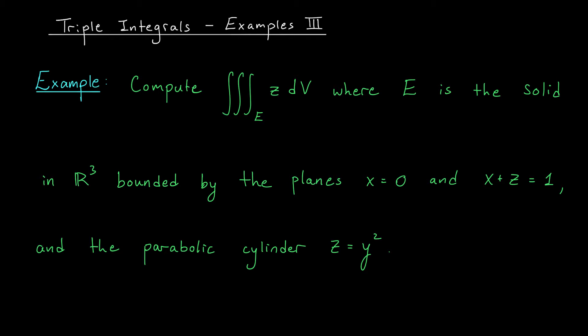Here we're looking for the triple integral over the 3D region E bounded between the planes x equals 0, x plus z equals 1, and the parabolic cylinder z equals y squared. The function we're integrating is f of x, y, z equals z.